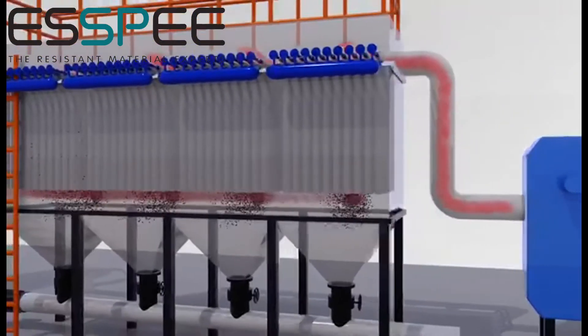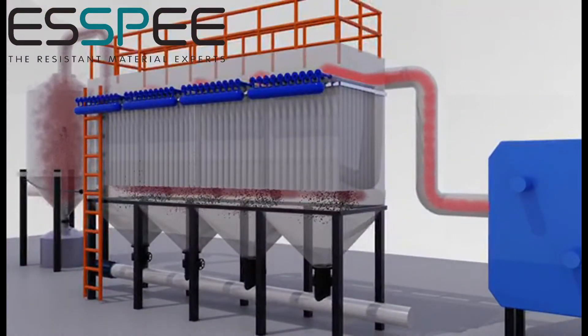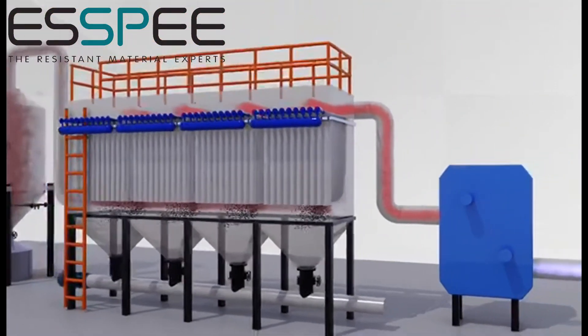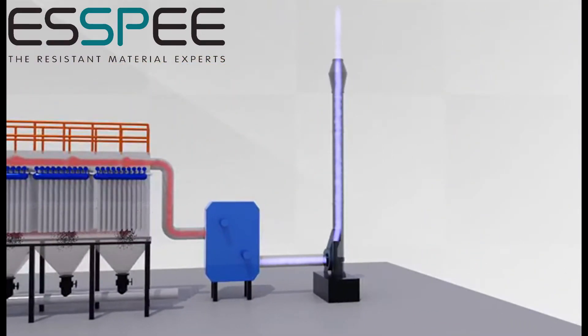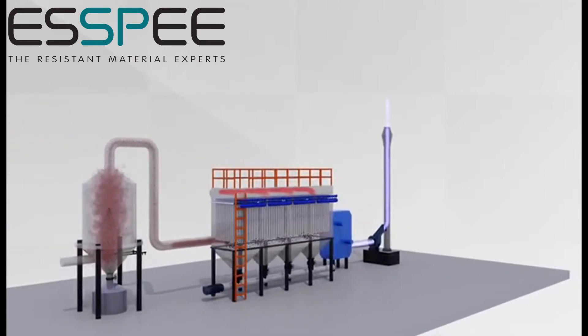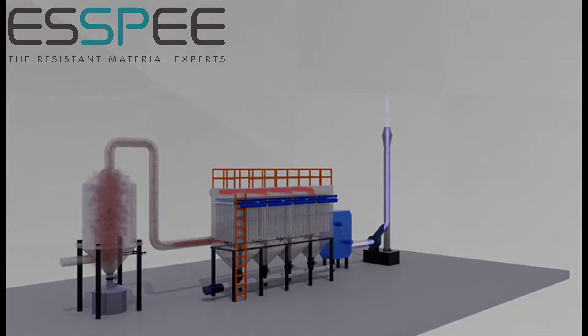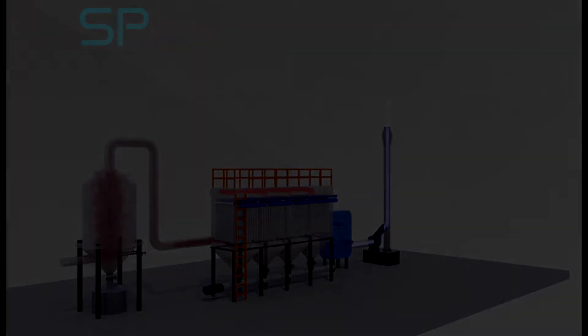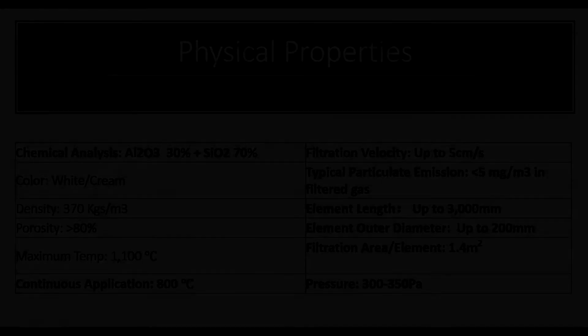The cleaned high temperature smoke gas is recovered by the heat energy of the heat exchanger and discharged directly into the high level chimney after cooling. The process can complete the collaborative removal of dust, sulfur and nitrate in one device, save energy and protect environment while satisfying the national ultra low emission standard.